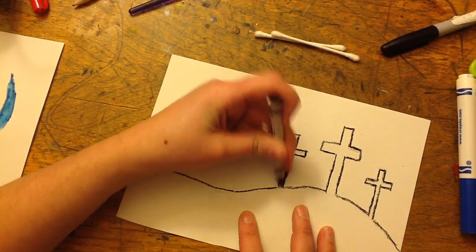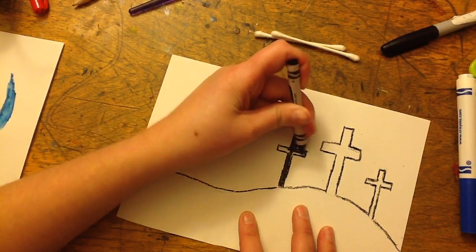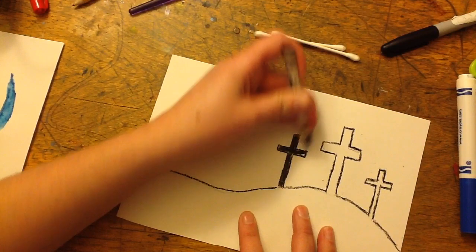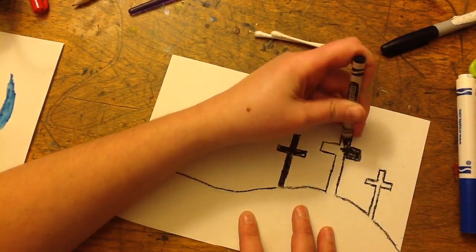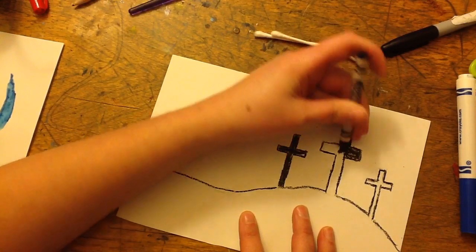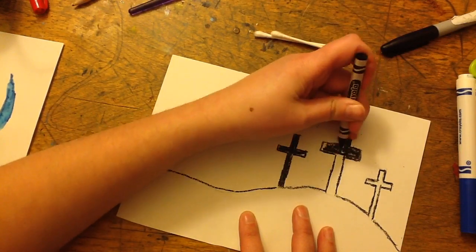Remember, anybody can do any of these projects, even if you are a mom or dad. So I'm gonna color in my hillside. I want my hillside and my crosses to be black because it's going to be silhouetted against the sky, so it is only a shadow, no details.